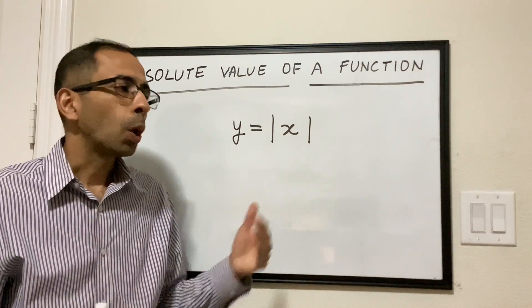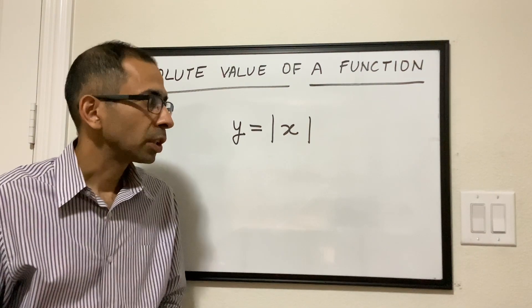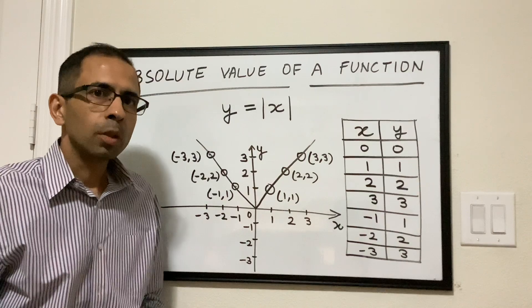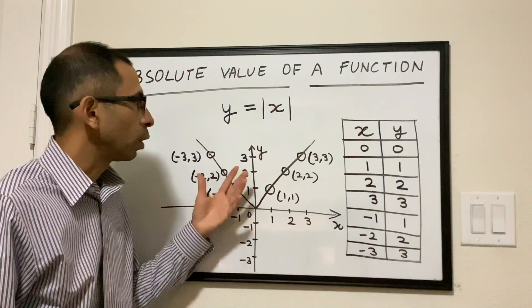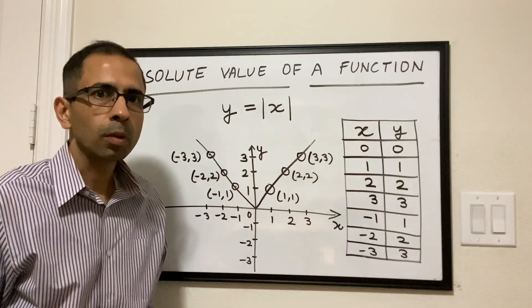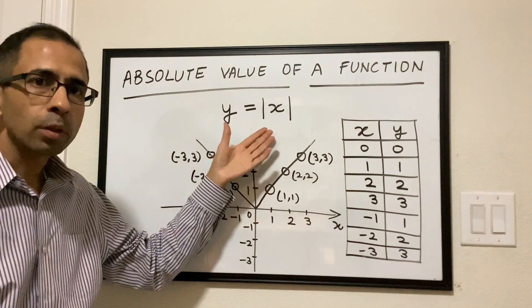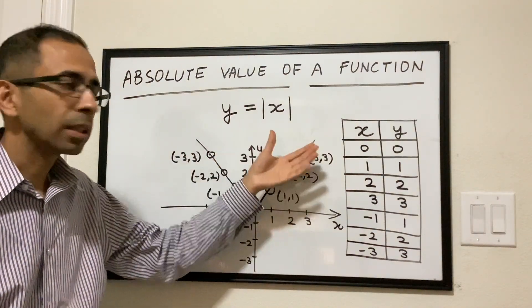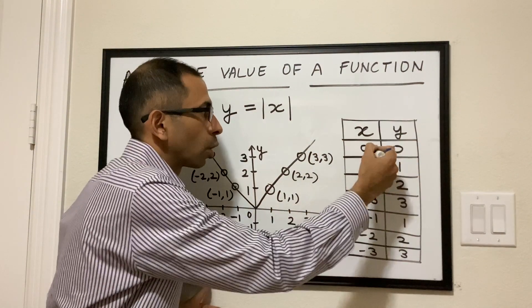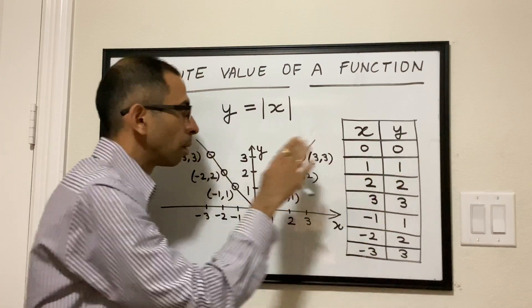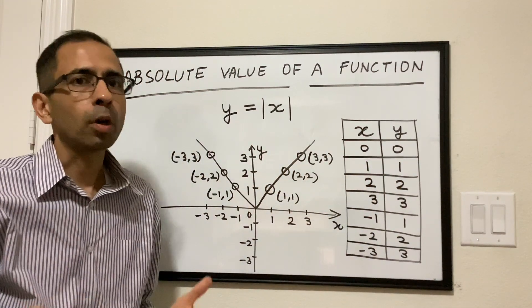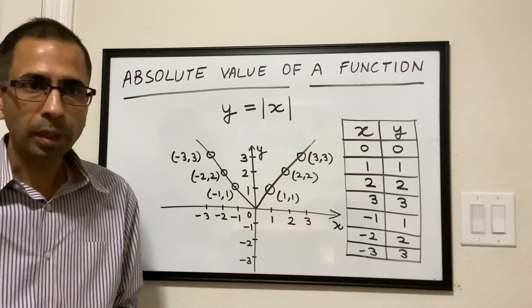Let's now see how we plot this function on an x-y axis. To plot the absolute value function, we create a simple x-y table as always. We give some values of x, get the corresponding values of y, get these coordinates, plot them on the x-y axis and join them. That's how we plot pretty much any function in the world.